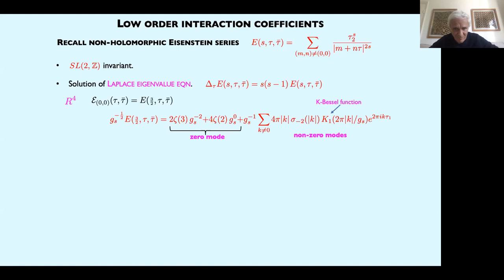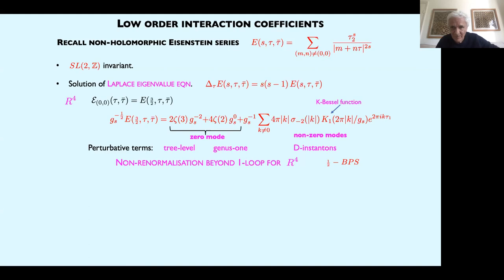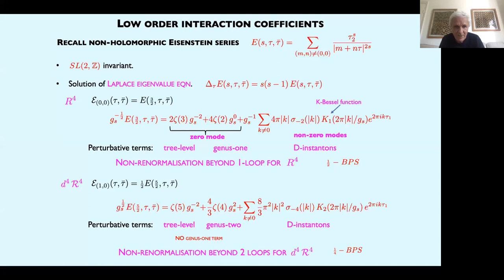The solutions of Laplace eigenvalue equations of this form are non-holomorphic Eisenstein series, defined as double sums over integers M and N — non-holomorphic versions of the familiar holomorphic Eisenstein series that are SL(2,Z) invariant. The R to the fourth coefficient is the Eisenstein series E_{3/2}, known to have an expansion involving a zero mode with precisely two power-behaved terms — corresponding to string perturbation theory — followed by an infinite set of instanton terms. This shows that R to the fourth is not renormalized beyond one loop. The quarter-BPS case has eigenvalue five halves; the D to the fourth R to the fourth coefficient has a two-loop term (the one-loop term vanishes) and is not renormalized beyond two loops.